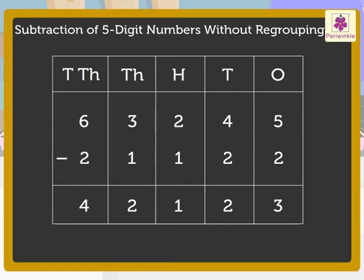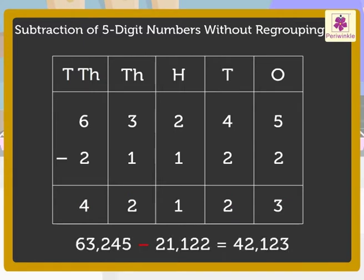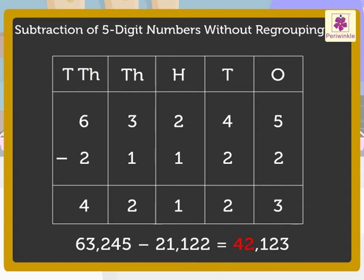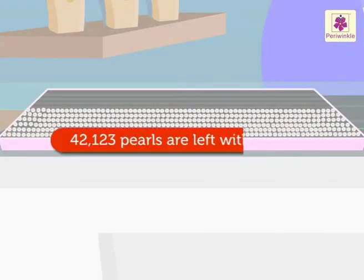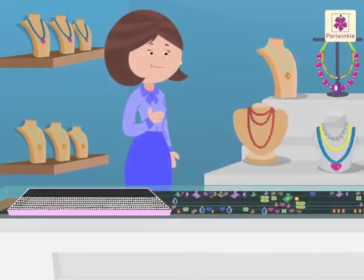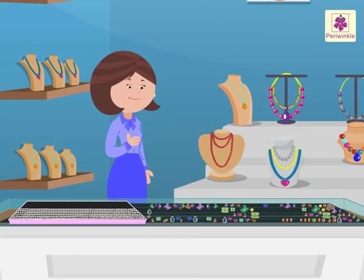Hence, we get the number 42,123. We say the difference of 63,245 and 21,122 is 42,123. Thus, 42,123 pearls are left with Ruby. Wow! It was an extraordinary experience learning about subtraction with jewels and pearls.